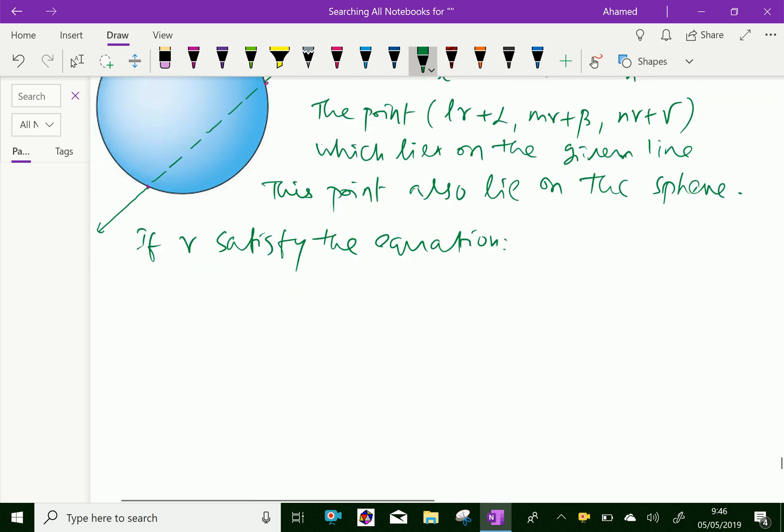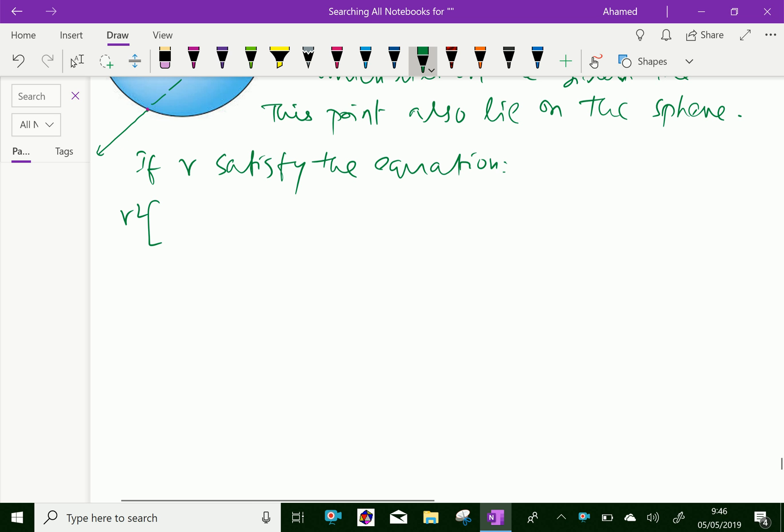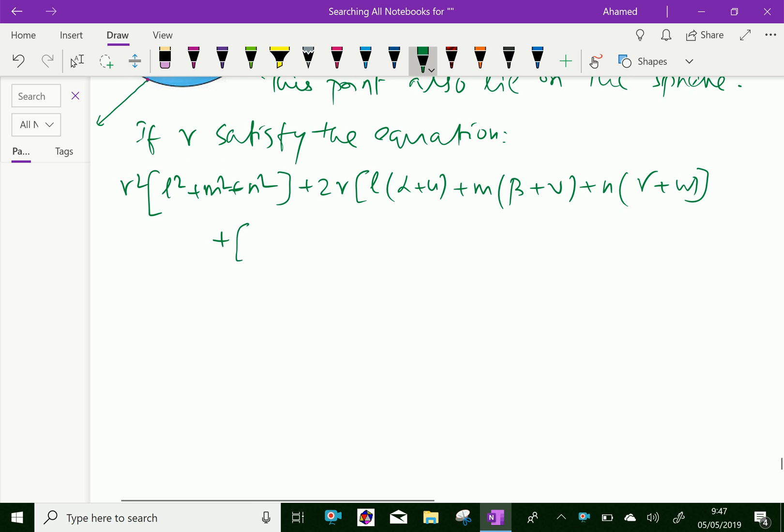The equation: r squared times (l squared plus m squared plus n squared) plus 2r times (l times (alpha plus u) plus m times (beta plus v) plus n times (gamma plus w)) plus alpha squared plus beta squared plus gamma squared plus 2u alpha plus 2v beta plus 2w gamma plus d equals 0.